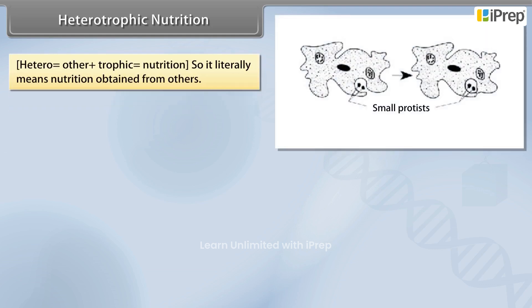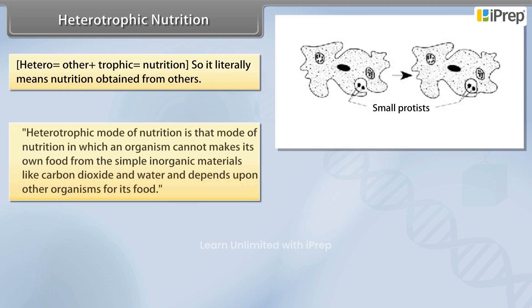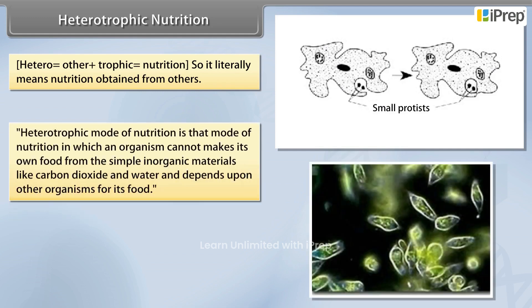Heterotrophic Nutrition — it literally means nutrition obtained from others. A heterotrophic mode of nutrition is that mode of nutrition in which an organism cannot make its own food from simple inorganic materials like carbon dioxide and water, and depends upon other organisms for its food.